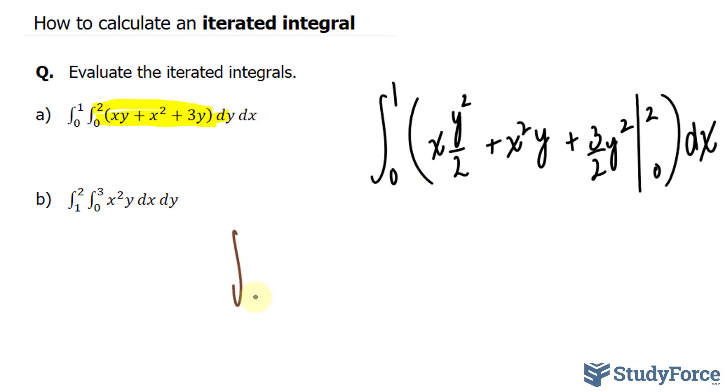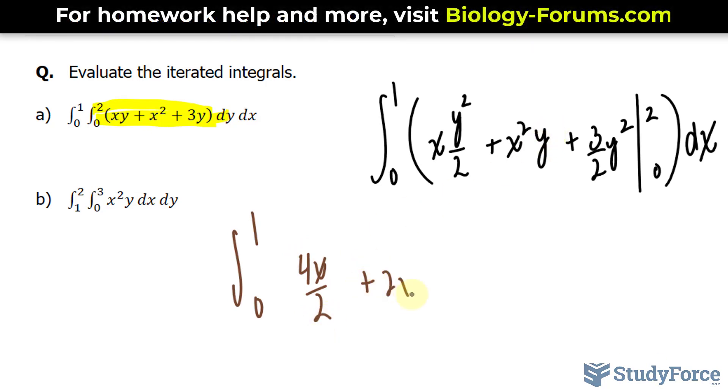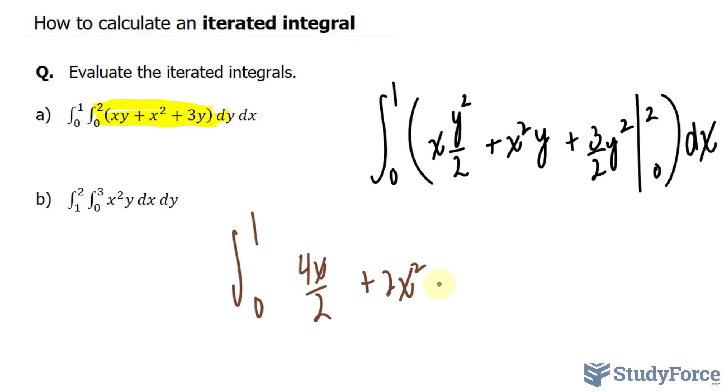And having substituted 2 into here, you have 4x over 2. Of course, you can reduce that. That would become 2x squared. And that would become 3 times 4 over 2, which is 6. And now you take the integral of this. I'm just going to reduce that to 2x.